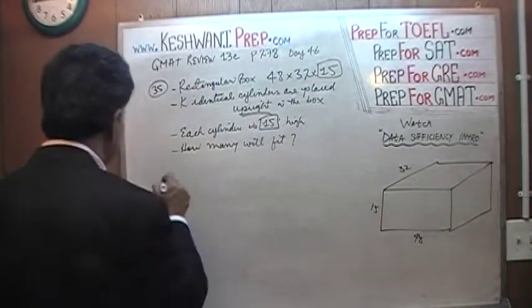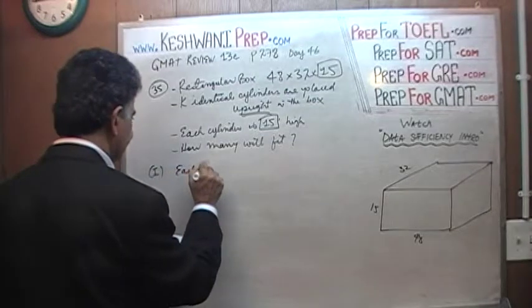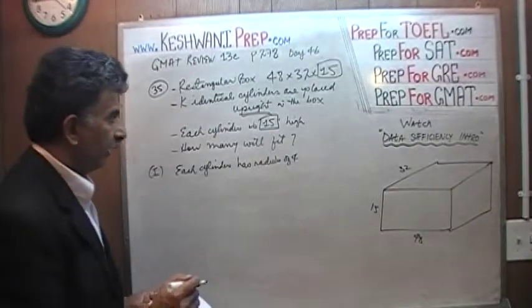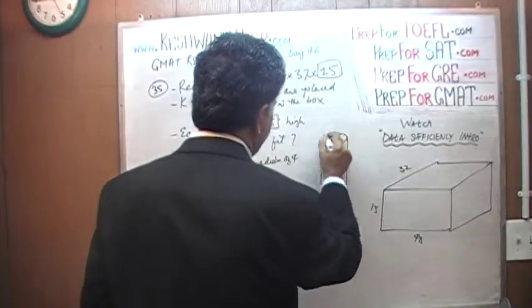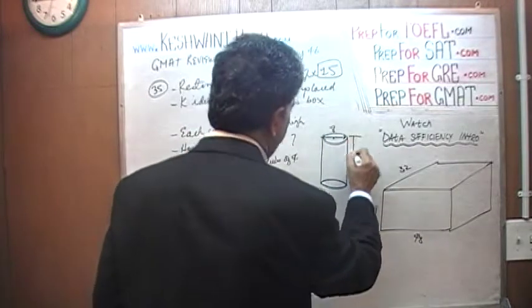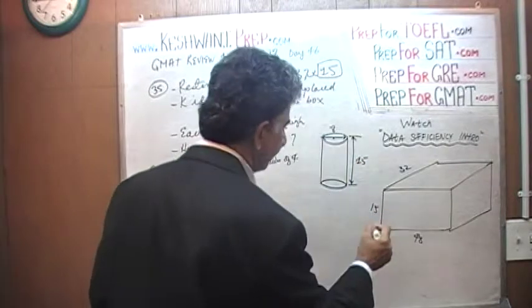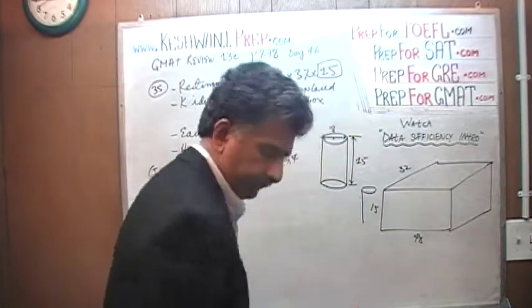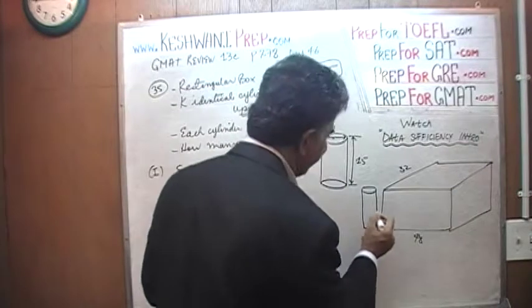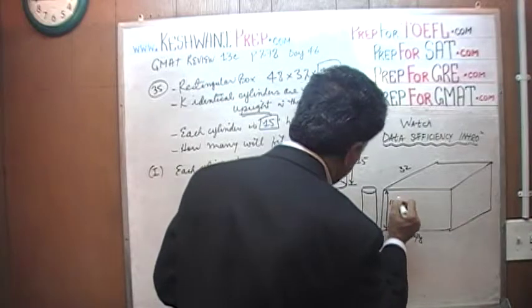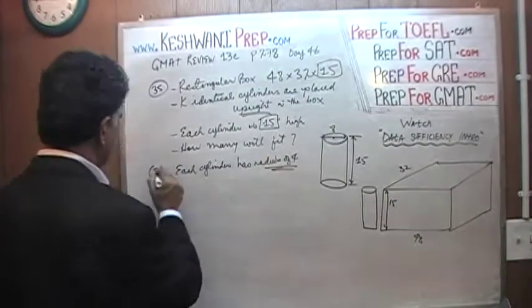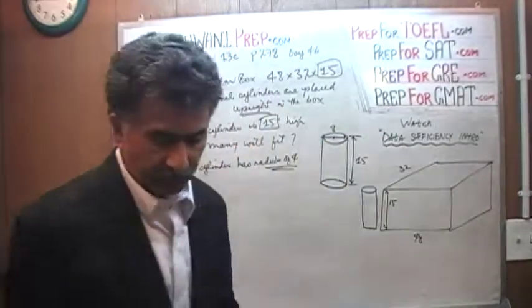Each cylinder has a radius of 4. If the radius is 4, the diameter of the cylinder is 8, and the height of the cylinder is 15 — the same as the height of the box. So the cylinder fits straight in. Since the diameter is 8, we don't have to deal with 3 dimensions.